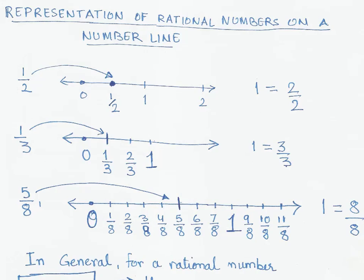Let us look at how we represent rational numbers on a number line. If you remember how we used to represent fractions on a number line, it is similar to that. A fraction is a rational number, so let's begin with a very simple rational number.